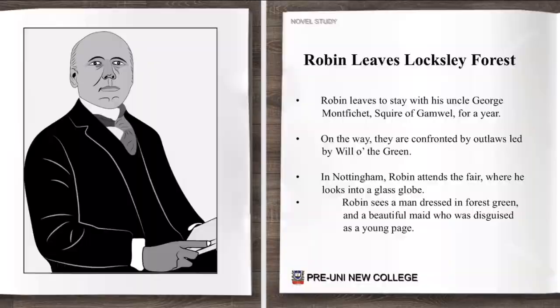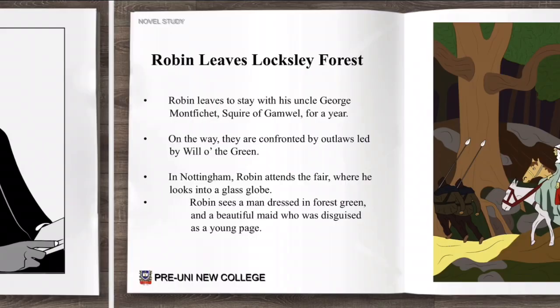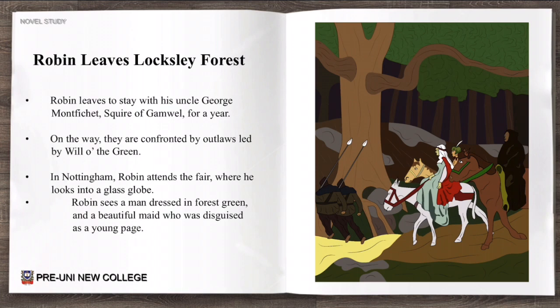Robin leaves to stay with his uncle George Montfechey, squire of Gamwell, for a year. On the way they are confronted by outlaws led by Willow the Green. In Nottingham, Robin attends the fair where he looks into a glass globe and sees a man dressed in forest green and a beautiful maid who is disguised as a young page.